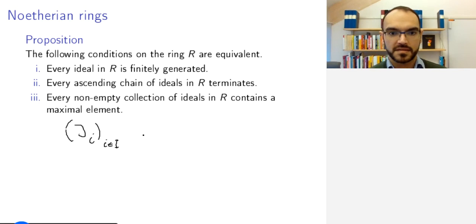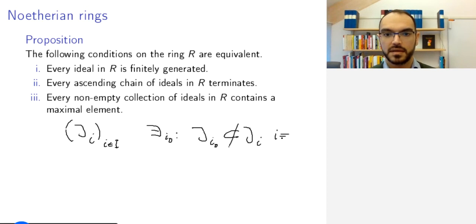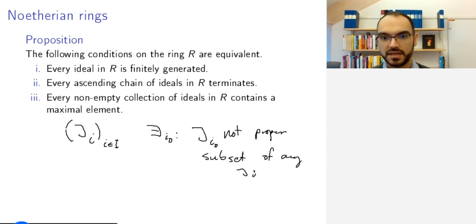then there is an I naught such that J_I_not is not contained inside any J_I, well not properly contained, that would be difficult to write symbolically, so not proper sub-ideal of any, or proper subset even, of any J_I.